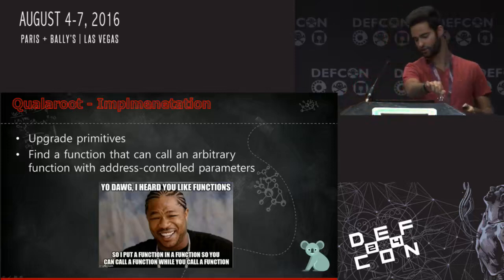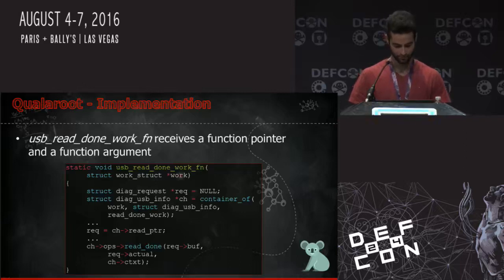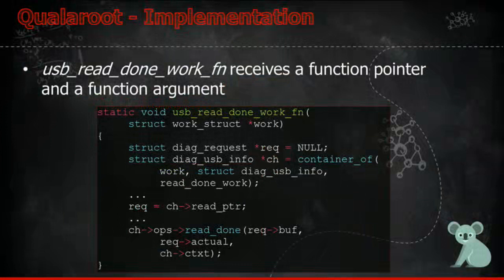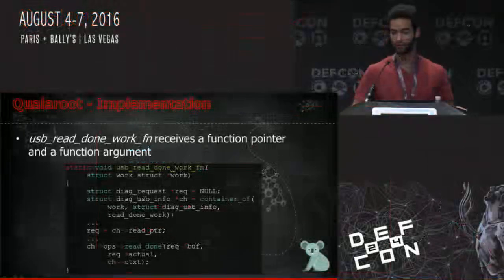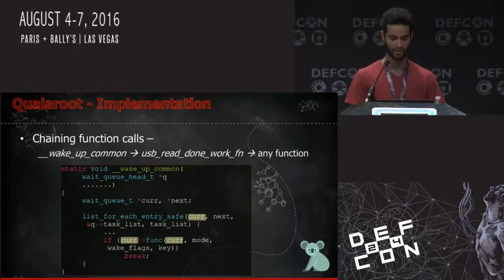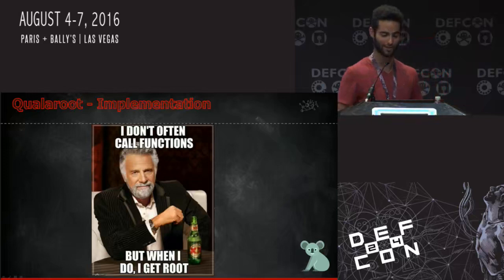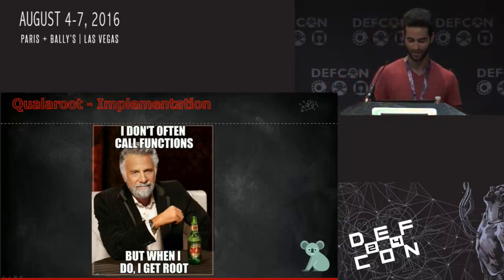So we had to upgrade our primitive. We needed to find a function that — by controlling just a little bit of its first parameter — would allow us to call another function with 100 percent control over its parameters. We found usb_reads_done_walk_fn. We control walk, so we control ch. Controlling ch allows us to control rec. Therefore, we can call any function while we have 100 percent control of the first parameter. buff is an address, so we can just put any pointer there. Each time we want to call a kernel function, we go through this chain: first we call wake_up_common, then we call usb_reads_done_walk_fn, and finally we can call any kernel function while controlling the first parameter. Now we have enough primitives to completely compromise the system, get our service roots, disable SELinux, and clean up our mess.